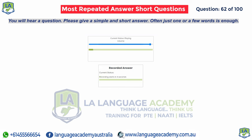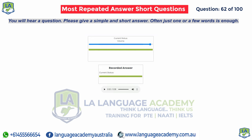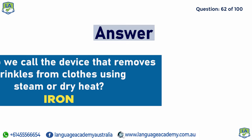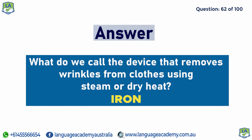What do we call the device that removes wrinkles from clothes using steam or dry heat? Iron.